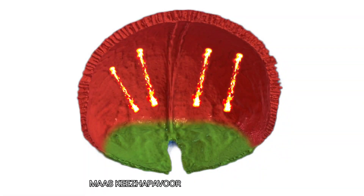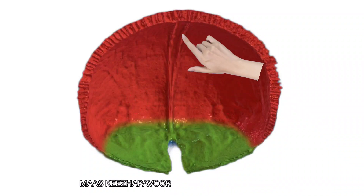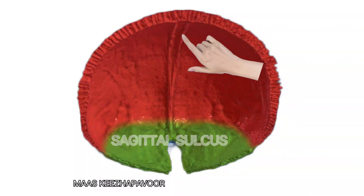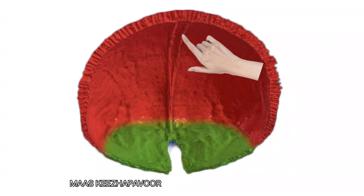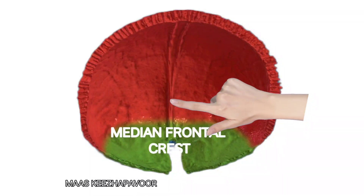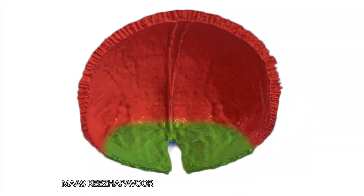Both supraorbital and supratrochlear nerves are branches from the frontal nerve, which arises from the ophthalmic division of the trigeminal nerve. The internal surface of the squamous part is concave and shows impressions caused by sulci and gyri of the frontal lobe of the cerebral hemispheres. A vertical median groove called the sagittal sulcus is present, which lodges the superior sagittal sinus.